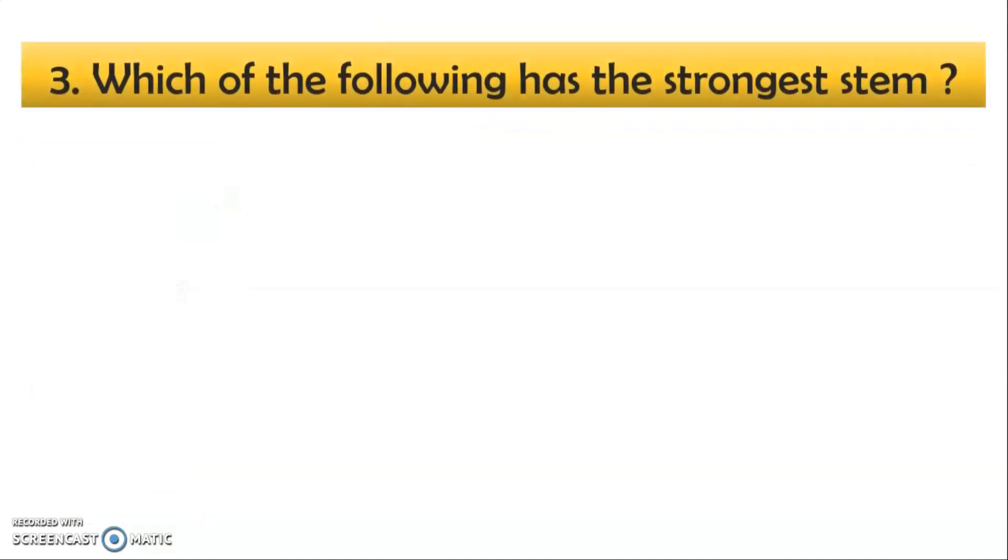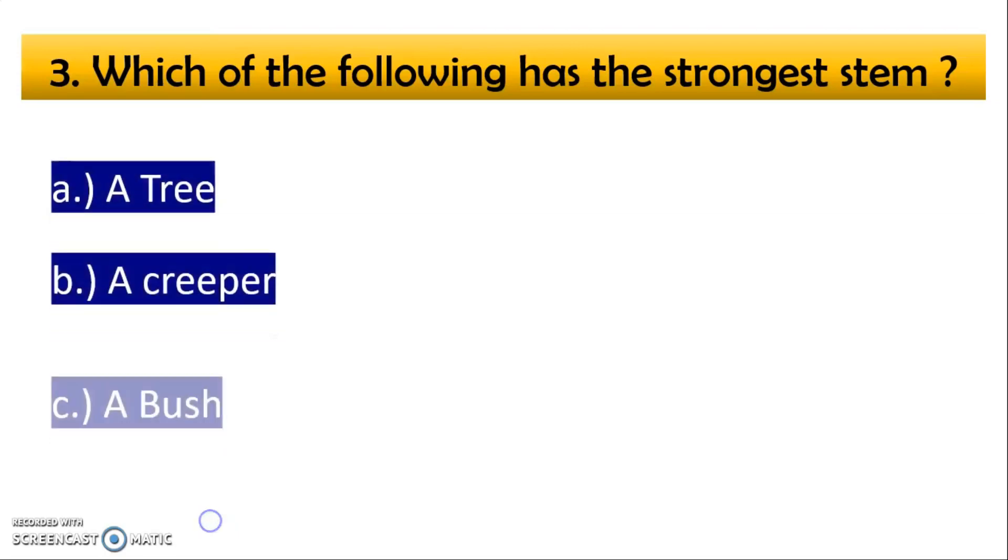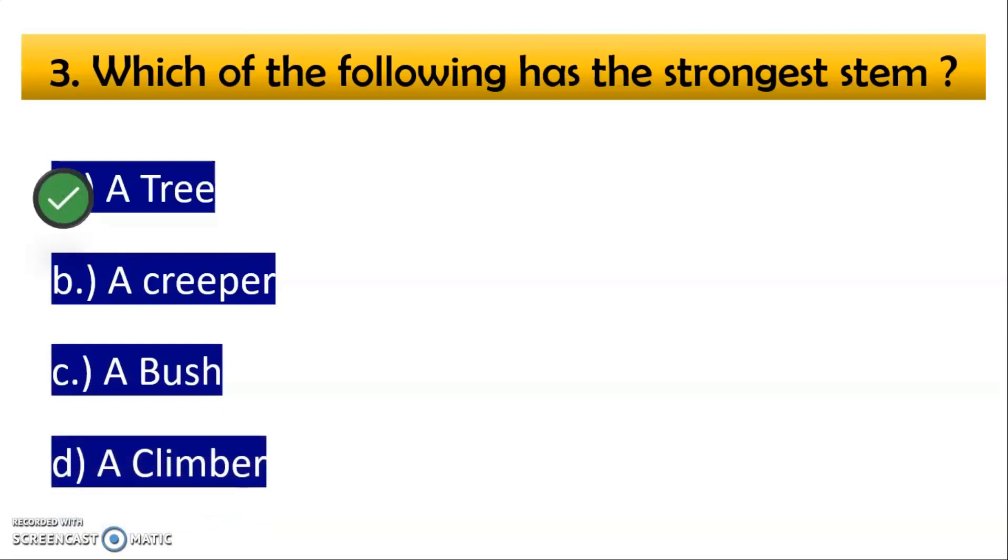Now third question, which of the following has the strongest stem? A option a tree, B option a creeper, C option a bush or D option a climber. So correct is a tree.